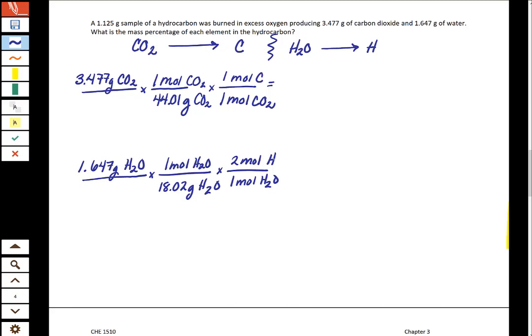So if we're asked for the mass percent of each element in the hydrocarbon, remember that in our formula for mass percent, our percent for carbon would be the grams of carbon divided by the grams of the sample, which was conveniently given. And then our percent of hydrogen would be our grams of hydrogen divided by the mass of the sample. And so let's look back up at our work that we have up here.